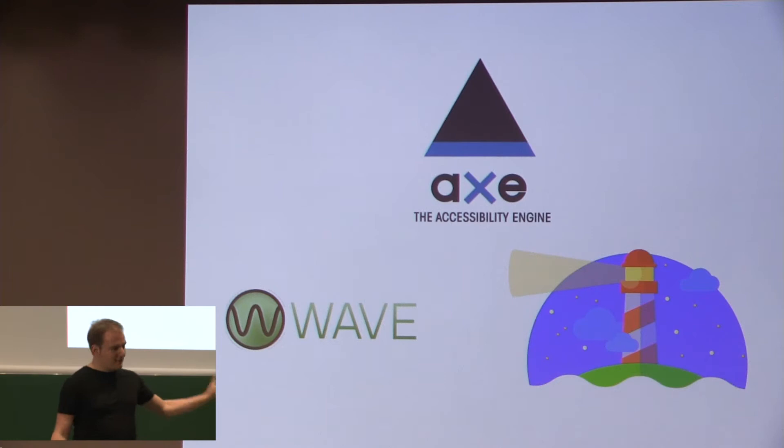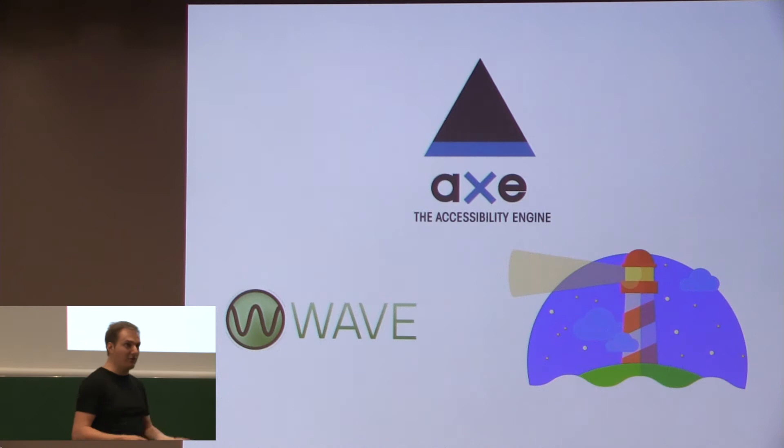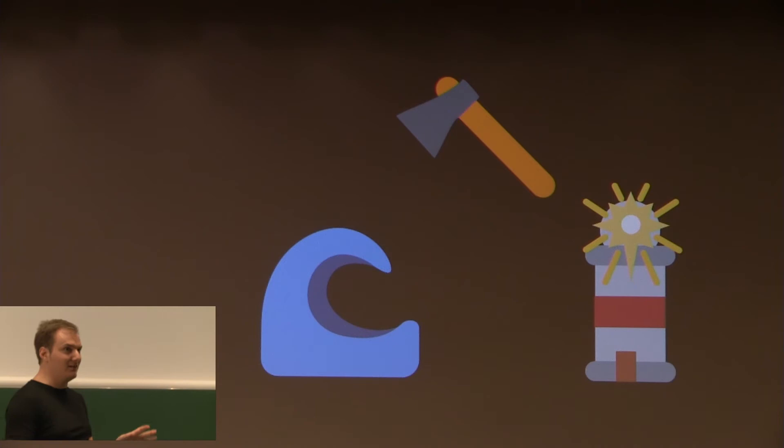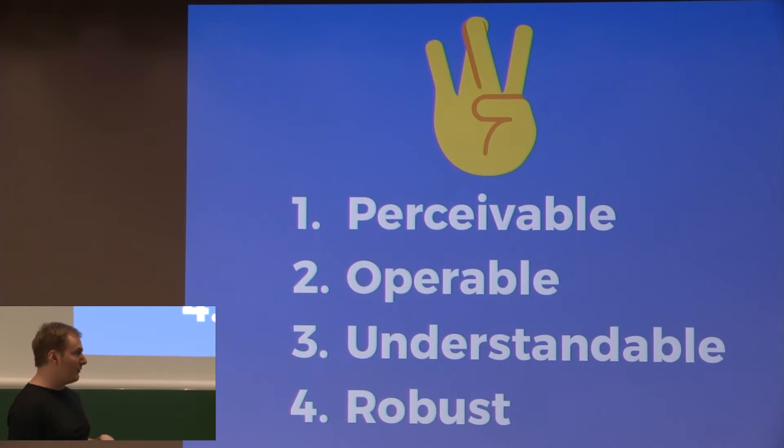So if you're already tuning out, there are some pretty good tools — Wave, Axe, and Lighthouse — that you can install as browser extensions. Easy to remember, because that's exactly what you need for a really bad B-list horror movie.